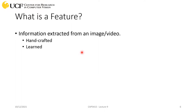Let's try to understand what a feature is and why we need it. A feature is something you extract from your input sample — your input sample could be an image or a video. Features can be either handcrafted, meaning you design the algorithm using heuristics to extract a particular property, or they can be learned features, where you don't use heuristics — instead, when you train a neural network, you automatically learn features useful for solving a particular problem.